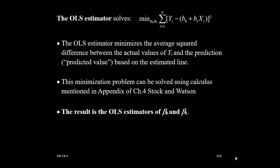As I was talking about, minimizing sum of squares of errors: beta naught and beta 1 are your population parameters which are unknown, and we want to estimate these parameters by using sample data. What is ordinary least squares? Ordinary least squares basically minimizes the average squared difference between the actual values of Y and the predicted value based on the estimated line.